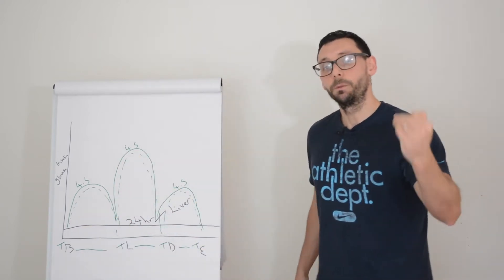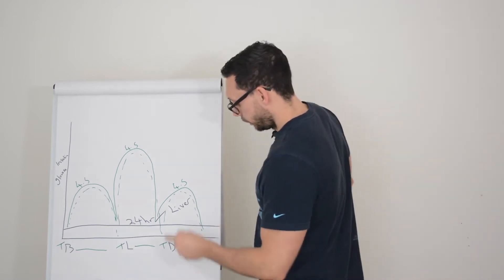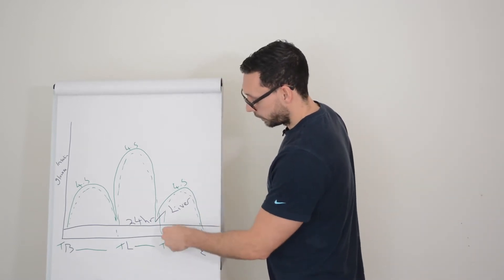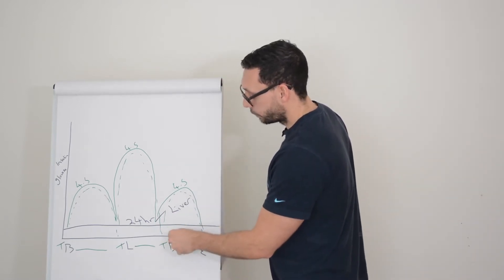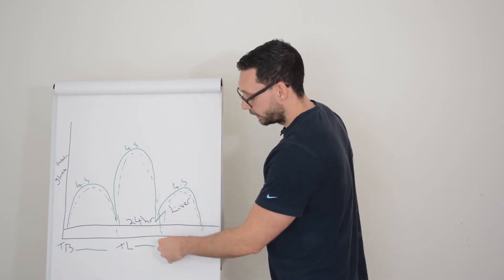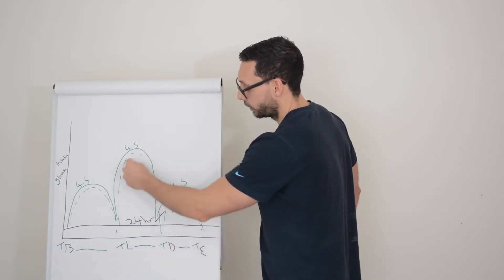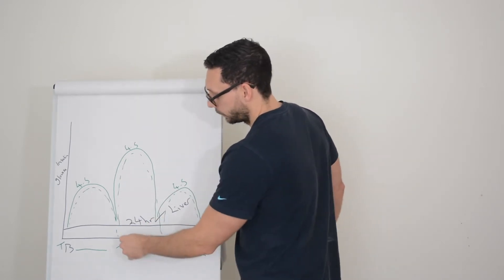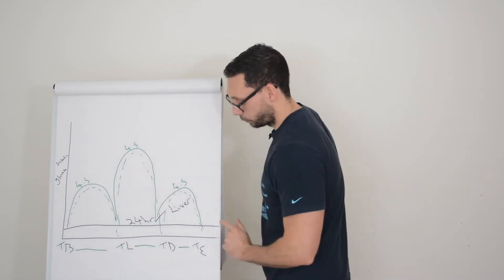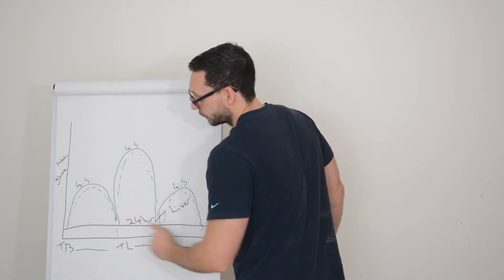Remember: in diabetes we work backwards. The evening result is influenced by the dinner dose. The pre-dinner test is influenced by the lunch dose. The pre-lunch result is influenced by breakfast, and overnight is influenced by your background insulin.